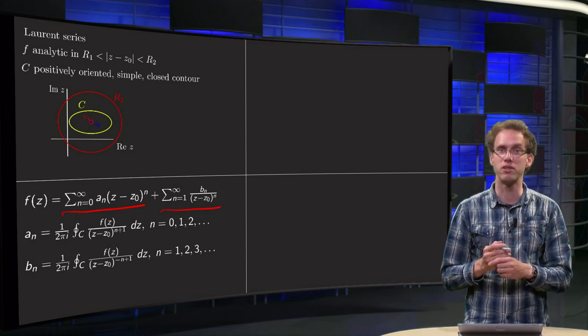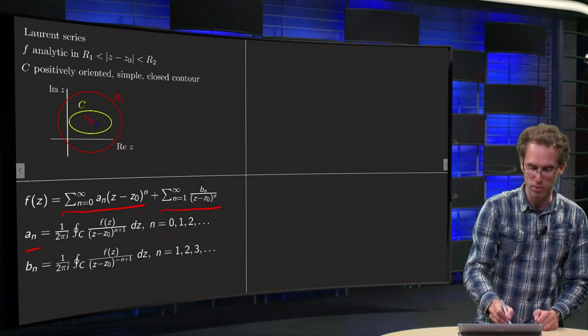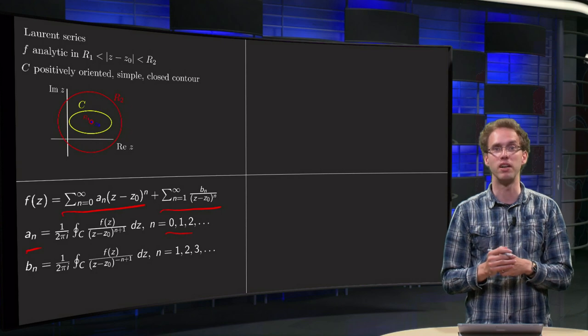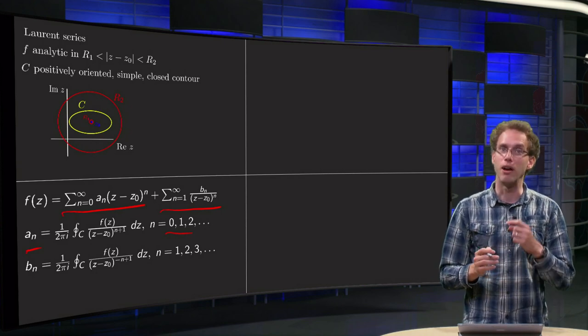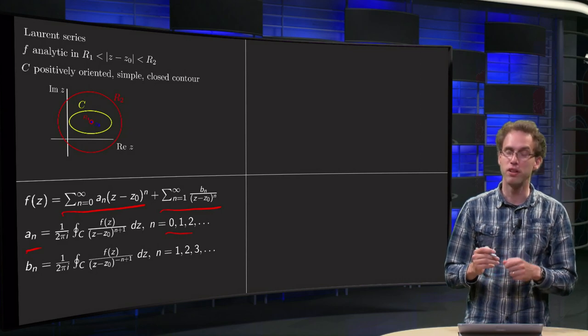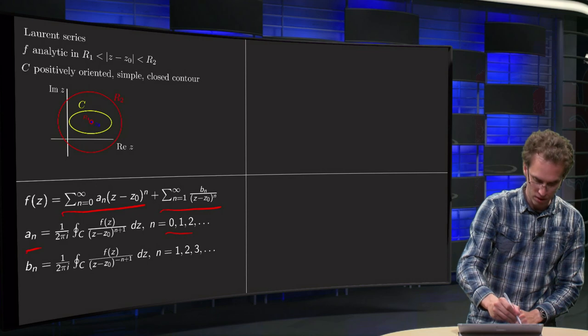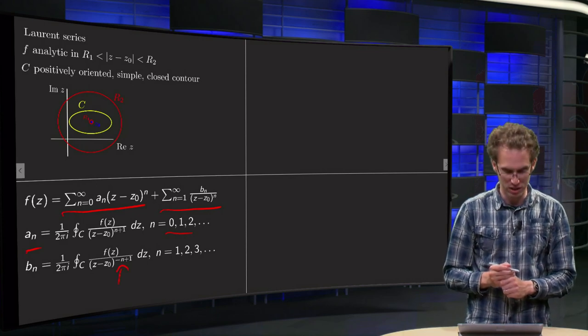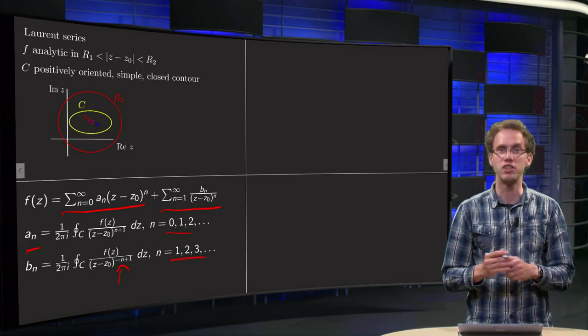The theorem tells us how to find the coefficients, the an for n from 0, 1, 2, etc., so from the positive powers in z minus z0. That is just the same as we had for Taylor series. Now the bn becomes a bit different but quite similar. We only get a minus n over here instead of plus n, and now n runs from 1, 2, 3, etc.